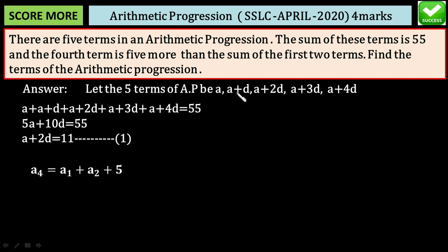That is a and a+d. So a₄ means a+3d is equal to a₁ plus a₂, which is a plus a+d plus 5. Add up a and d.